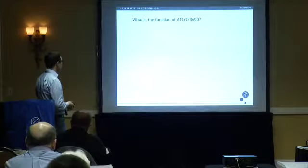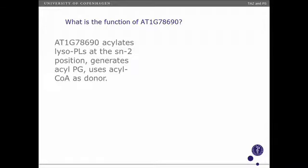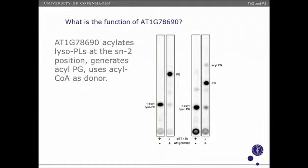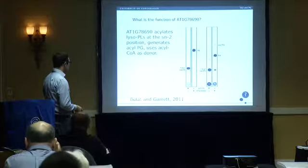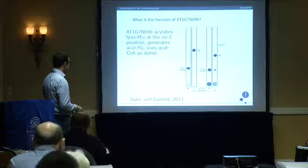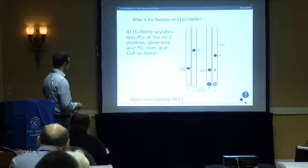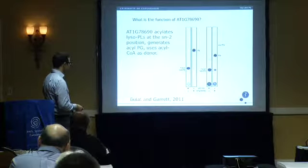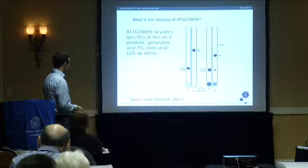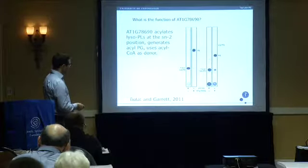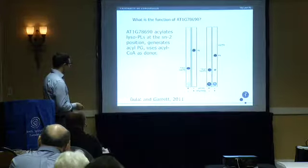So what is the function of AT1G78690? It is a lysophospholipid acyltransferase that re-acylates lyso-PLs at the SN2 position. In the control lane you have mono-acyl lyso-PE; when you add the vector expressing the gene, you generate PE. Similarly, if you have mono-acyl lyso-PG, you add the vector, you get PG — and you also get a small spot of the tri-acylated lipid, acyl-PG.